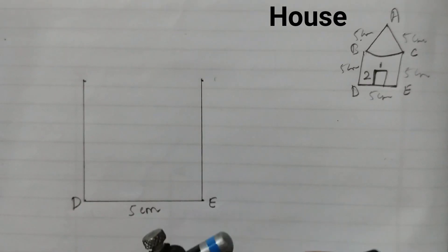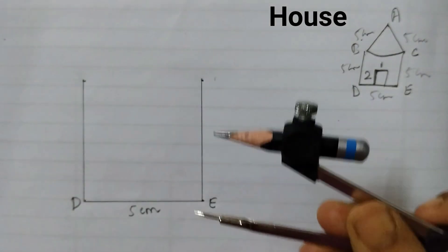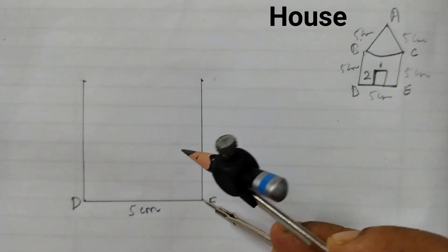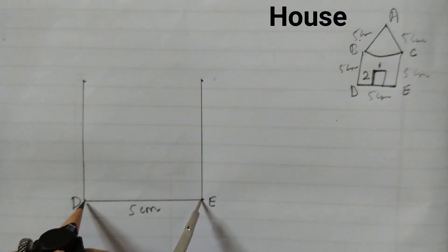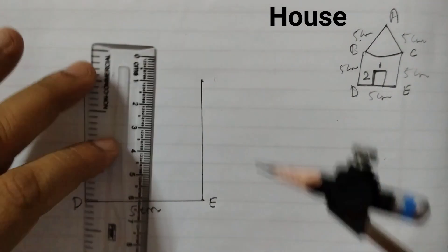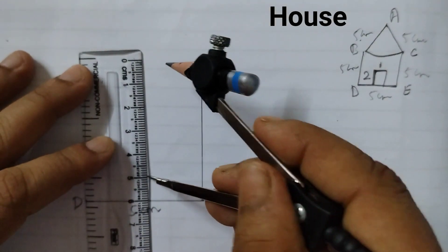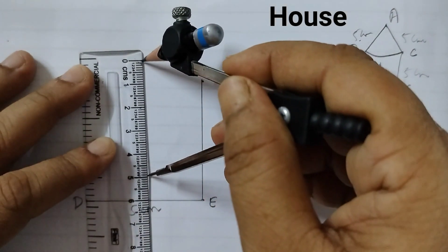Now we will take a compass and we will take the measurement of 5 cm. We know that this length is 5 cm. So I can just open up my compass and I can place it like this to take the measurement of 5 cm. And also we will check once with the scale. We have taken it properly. See here it's proper.